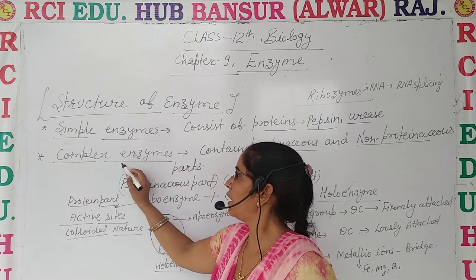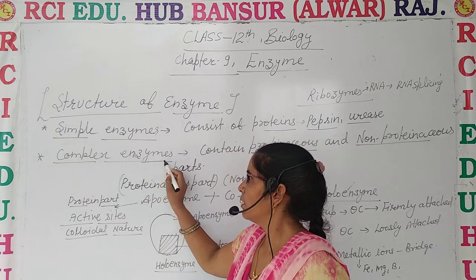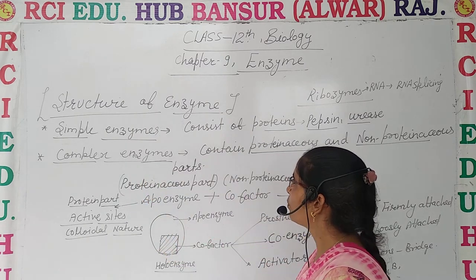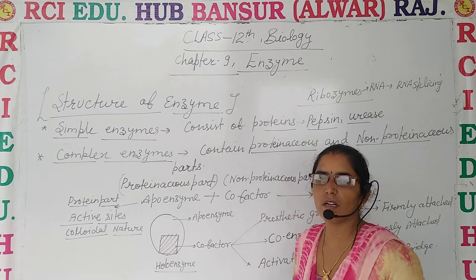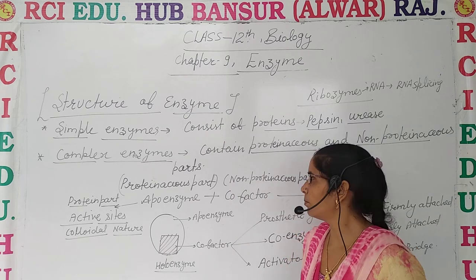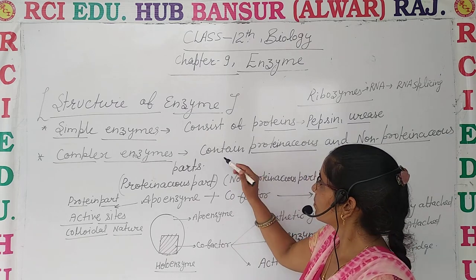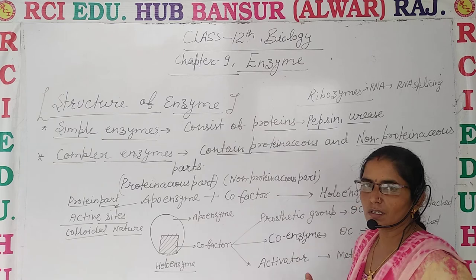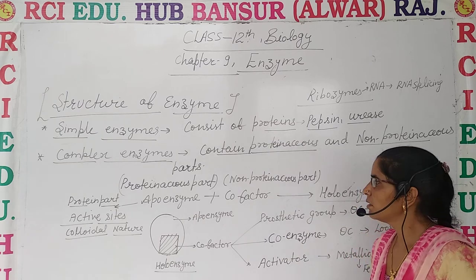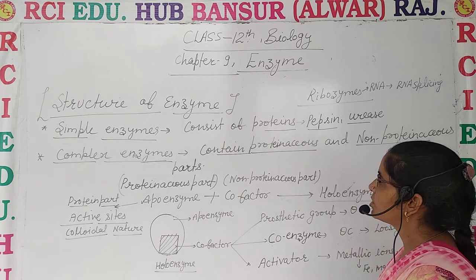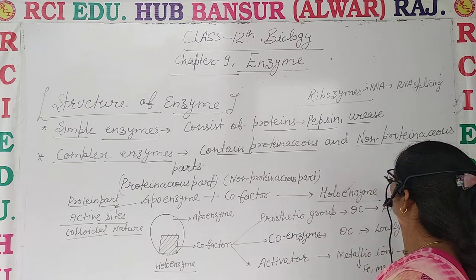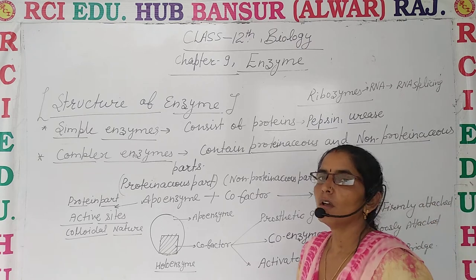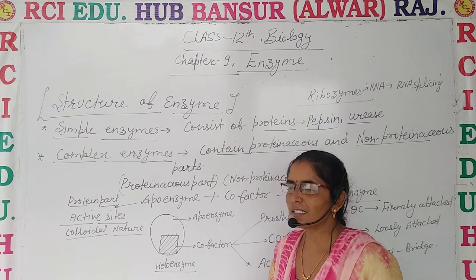Another type is complex enzymes. These are those enzymes which consist of protein as well as a non-protein part also. Complex enzymes contain proteinaceous parts known as apo-enzyme, and a non-protein part which is known as co-factors.